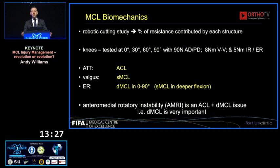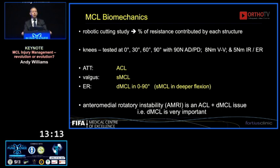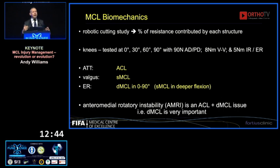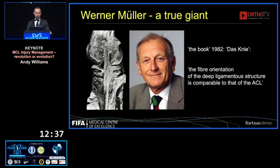We looked at the biomechanics using a classic robot study to calculate the percentage resistance of each part of the MCL to various translations and rotations. We found, not surprisingly, that anterior tibial translation is resisted by the ACL, and the superficial MCL is the primary restraint to valgus throughout range. But the thing that surprised us — because most people have described external rotation as resisted by the superficial MCL — is that the deep MCL turns out to be really important. It's the primary restraint to external rotation in the 0 to 90 degree range. So when we talk about anteromedial instability, it's not just ACL plus MCL, it's ACL plus deep MCL.